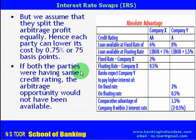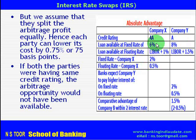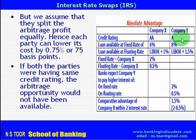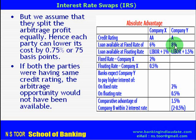If both parties were having the same credit rating, the arbitrage opportunity would not have been available. This arbitrage opportunity is available because they have different credit ratings and are charged different fixed rate loans and different interest on floating rate loans.